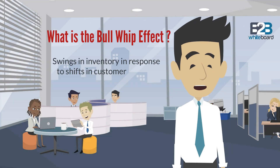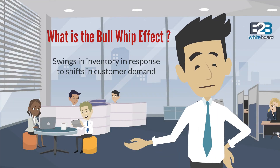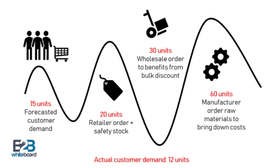Let me explain the bullwhip effect. The bullwhip effect is a distribution channel phenomenon in which forecasts yield supply chain inefficiencies. It refers to increasing swings in inventory in response to shifts in customer demand as one moves further up the supply chain.